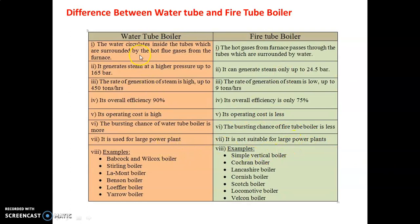There are many examples of water tube boilers: Babcock and Wilcox — the most famous, used in most thermal power plants — Sterling boiler, Lamont boiler, Benson boiler, Loeffer boiler, and Yarrow boiler. Examples of fire tube boilers include simple vertical boiler, Scotch round boiler, Lancashire boiler, Cornish boiler, Scotch boiler, and locomotive boiler.